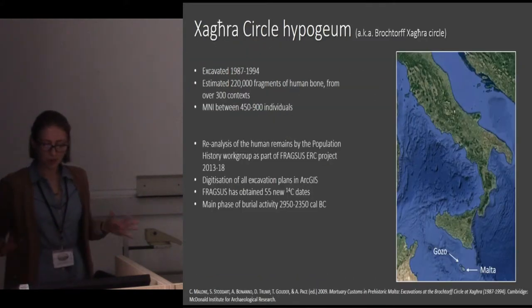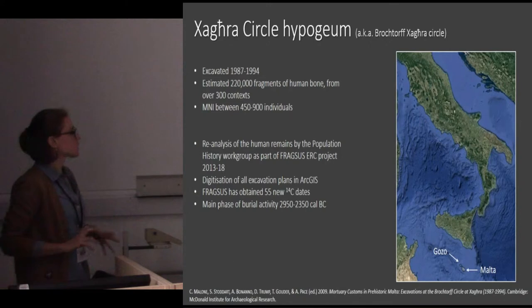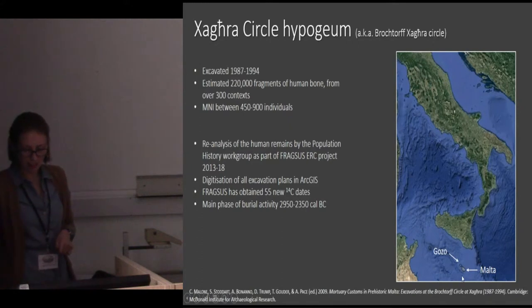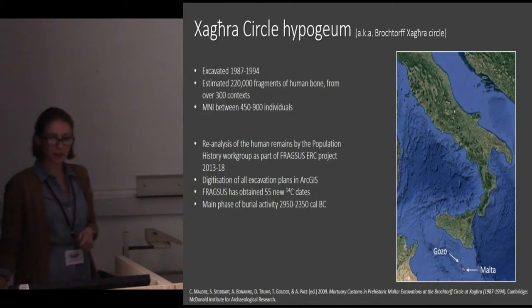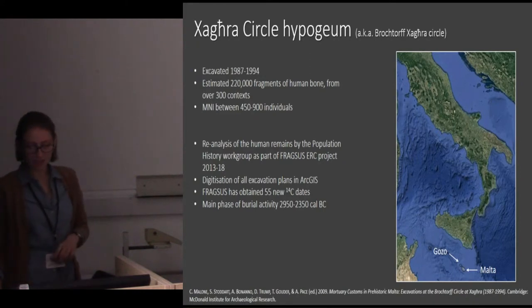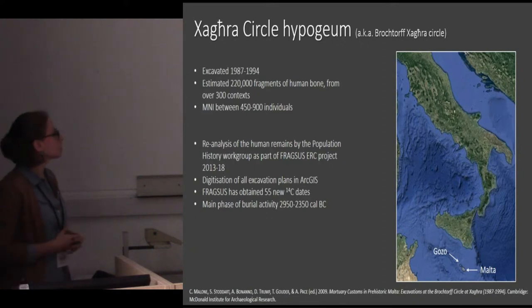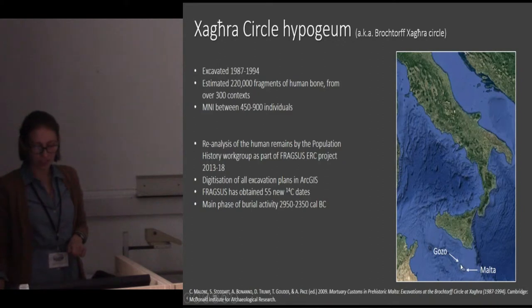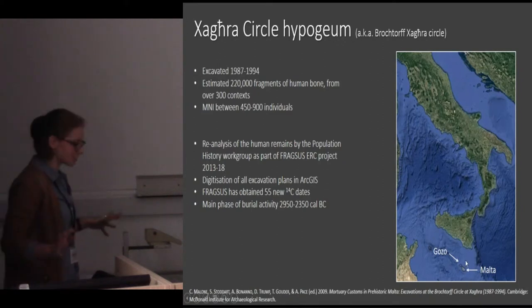Malta is a tiny island about 80 kilometres off the south coast of Sicily. It's only 246 square kilometres, and it's a theme in prehistory that weird things happen on islands. They create a really unique situation for the proliferation of certain cultures for a long period of time, as you may be more familiar with in Neolithic Orkney. The site I'm working on is located on the smaller sister island of Gozo, so maybe even weirder things are happening there.